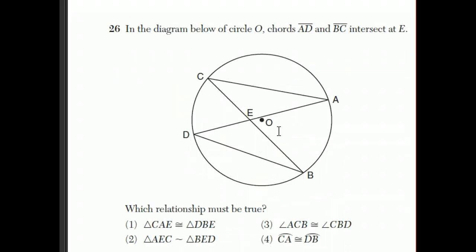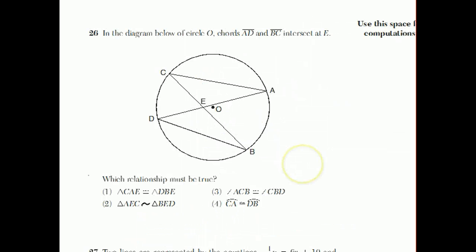In the diagram below, circle O, you have chords AD and BC intersecting at E, and they want to know which relationship must be true. One thing that happens when two chords intersect, we have something called an inscribed angle right here. And this angle is half equal to half of this arc over here. But more important for our purposes, this angle A also intercepts the same arc. And that makes these two angles congruent.